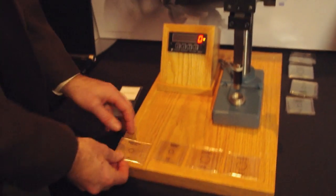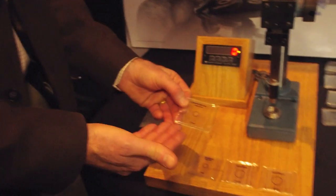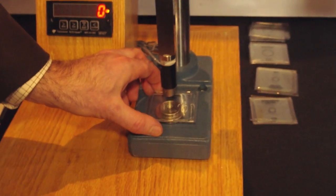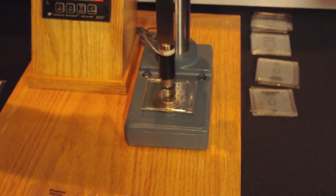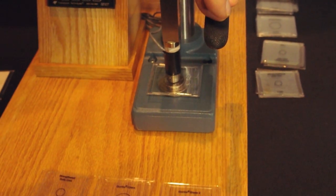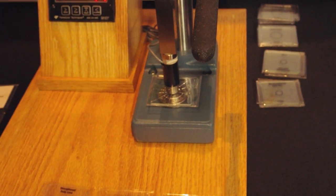So we'll start out with kind of a generic glass, a non-strengthened soda lime glass, and we'll go ahead and load this into the tester, and we'll bring down the test head, and you can see the breaking load at around 44 pounds.